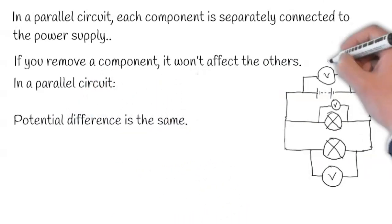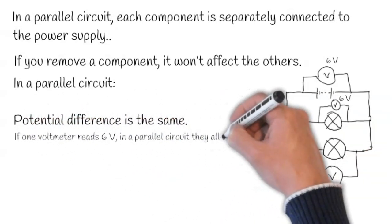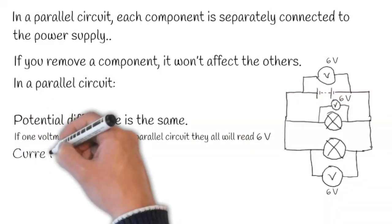In a parallel circuit, potential difference is the same everywhere. So if we have six volts here, then we'd have it here as well, and also here as well. If one meter reads six volts in a parallel circuit, they will all read six volts.